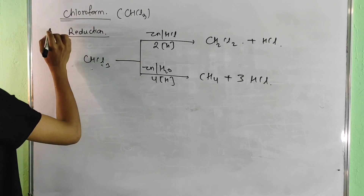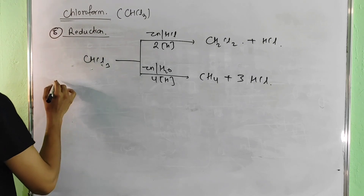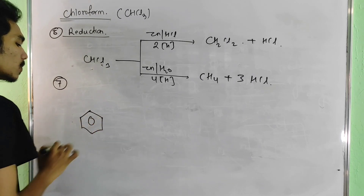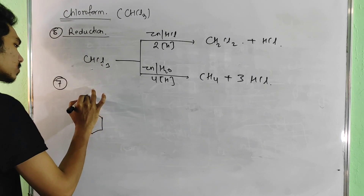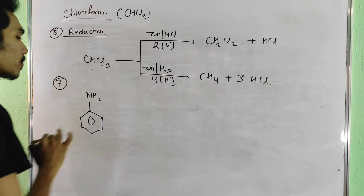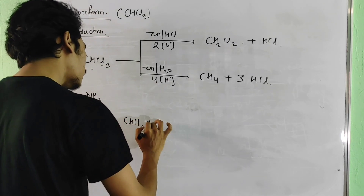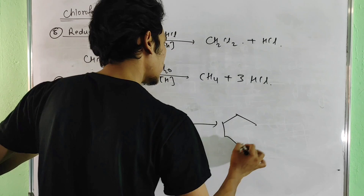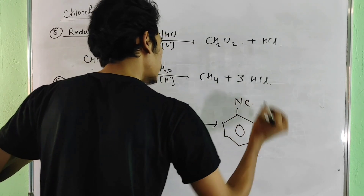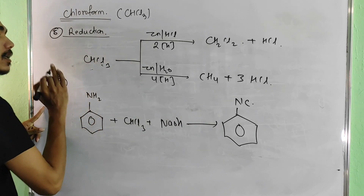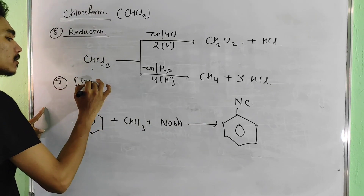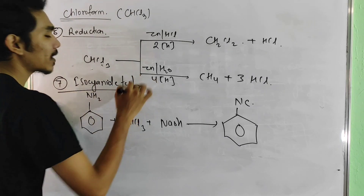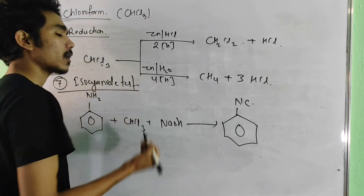For the isocyanide test, we use a benzene ring with NH2 — that is aniline — and add NaOH or KOH along with chloroform. The product formed is NC — isocyanide. This is called the isocyanide test, also known as the carbylamine reaction.